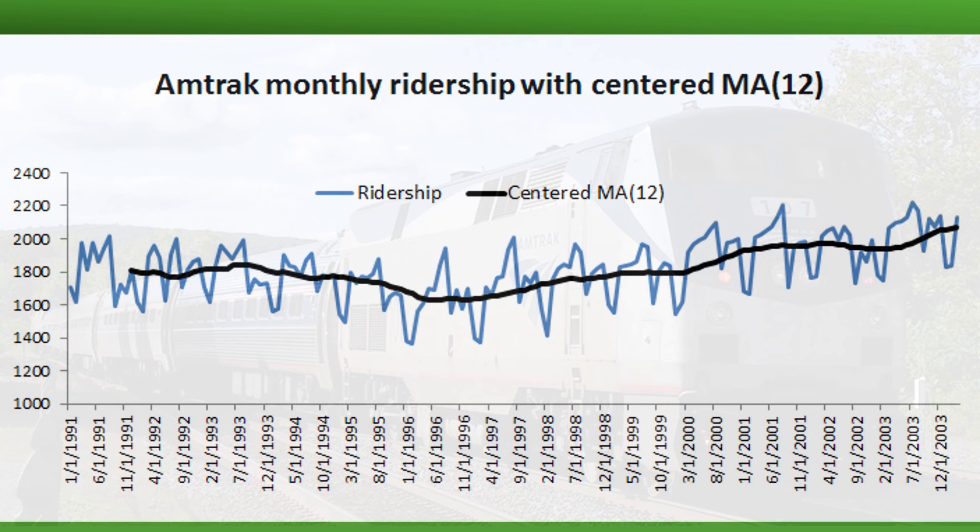Here's another example of using a centered moving average to visualize the monthly ridership on Amtrak trains. The black line is the moving average, and here we took a window of 12 months. We see again that the line can suppress the seasonality and the noise and highlight the trend that is going on throughout this period.